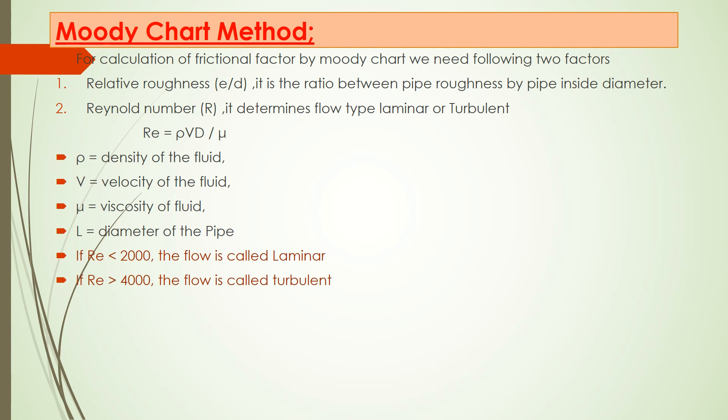Moody chart method: We use the Moody chart to calculate friction factor. When we use the Moody chart for calculation, you need two factors. One is relative roughness, which is the ratio between roughness of the pipeline and inner diameter of the pipeline. The second factor you need is Reynolds number.